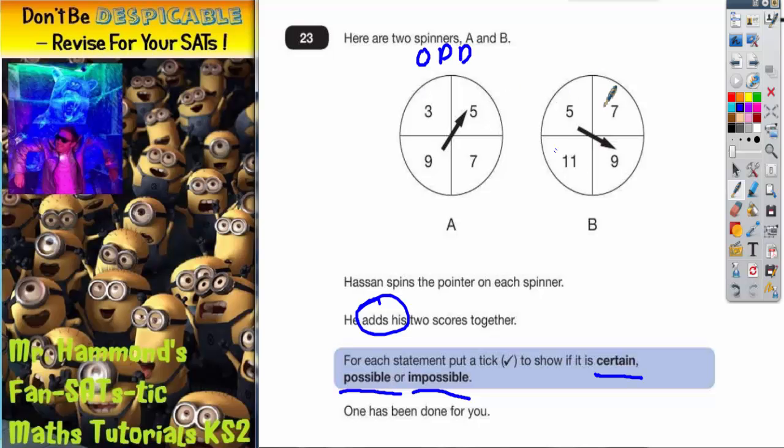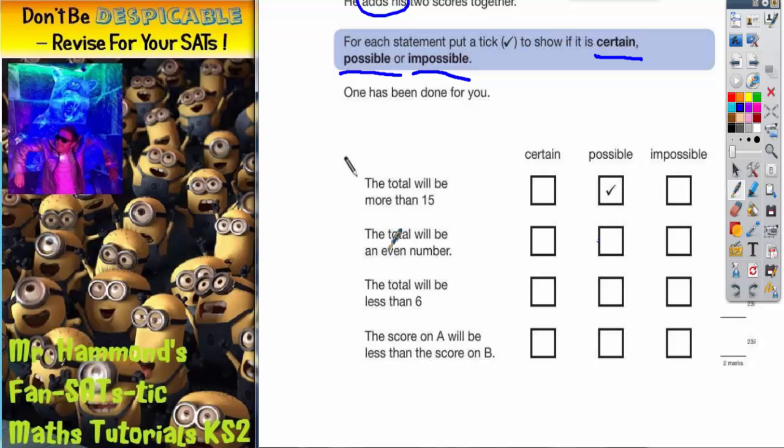All of the numbers on spinner B are also odd, but we've got to add them together. So we're doing an odd add an odd. No matter what we get we'll always end up adding an odd number to an odd number. And an odd number plus another odd number is always an even answer. So if it's always even, the total is certain to be even because it's always even when you do an odd plus an odd.